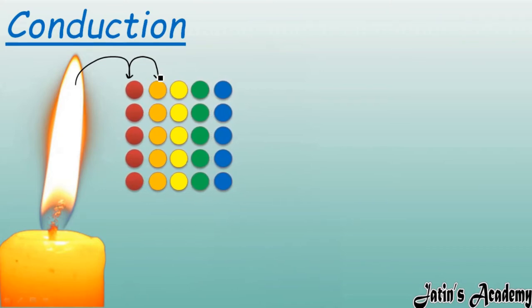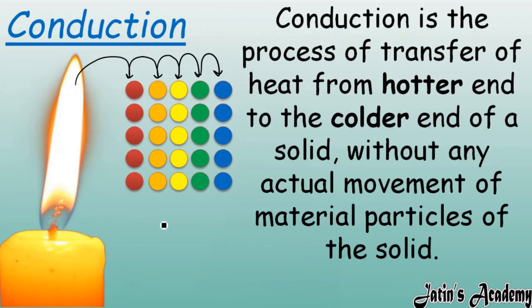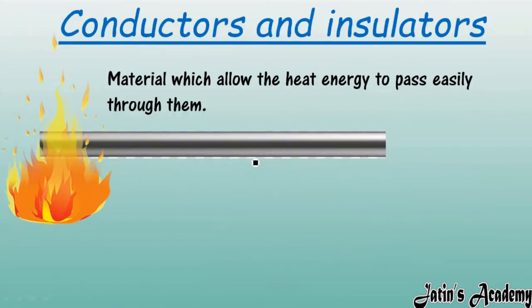These particles then transfer heat to the next particles, and so on through each layer. Heat moves from higher temperature to lower temperature, but without any actual movement of particles. Particles are just vibrating about their mean position and transferring energy from one layer to another. Conduction is a process of transfer of heat from the hotter end to the colder end of a solid without any actual movement of particles.